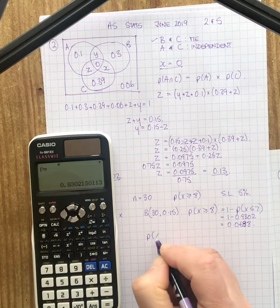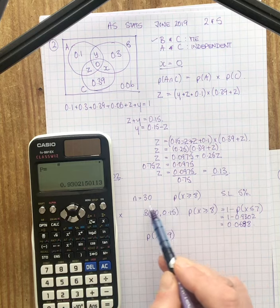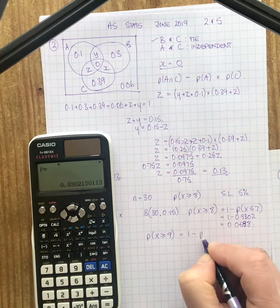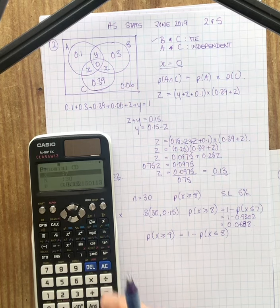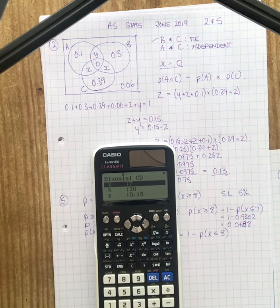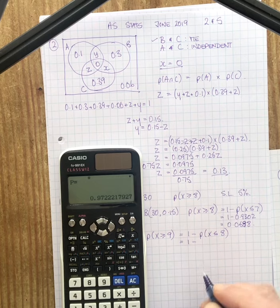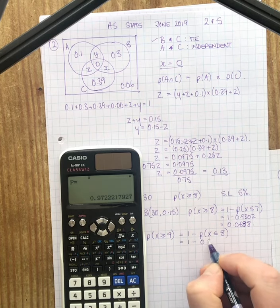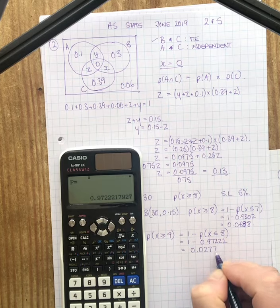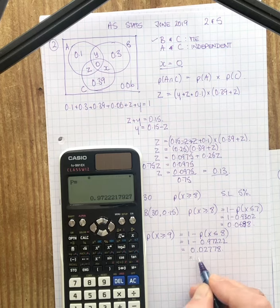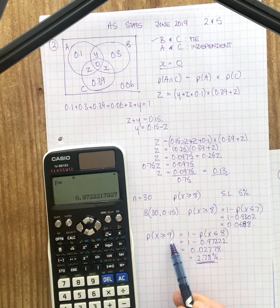Let's have a look at what happens with 9. So what's the probability that 9 or more people will choose chocolate if in fact this is our distribution? Again, using the calculator, I need to do 1 take away the probability up to and including 8. So using the same settings but this time X is going to be 8, N is 30, P is 0.15 and that tells me the probability that 9 or more people will choose chocolate is 1 take away 0.97222, which is 0.02778. Now this is 2.78%. This is now less than the 5% cutoff. So 9 is therefore my critical value.